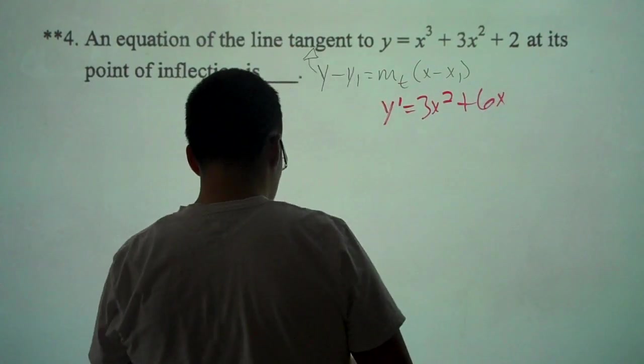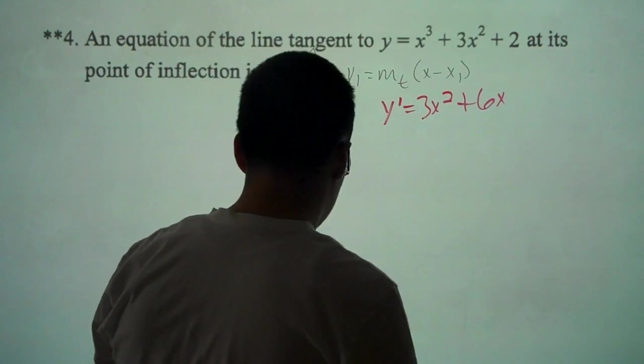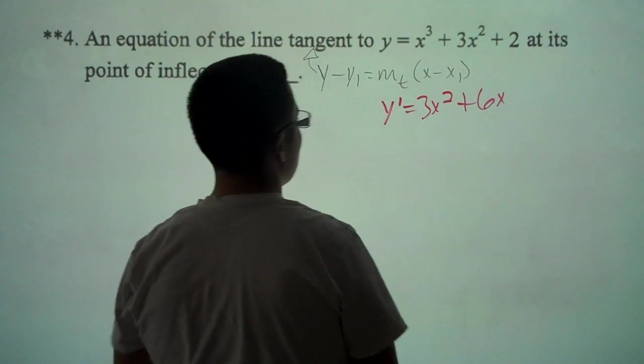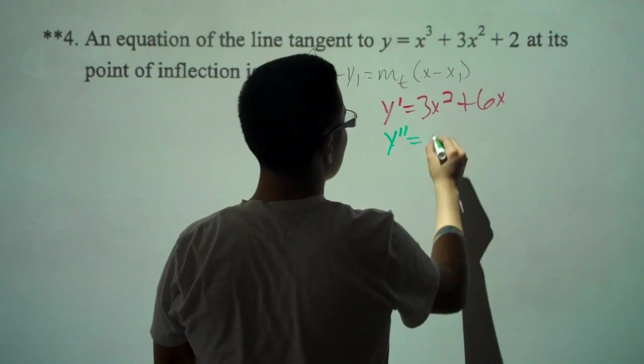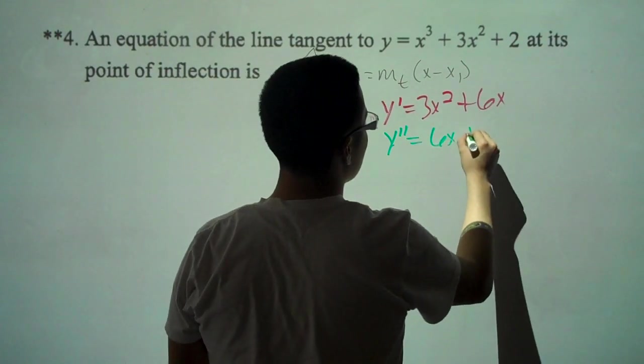Now we have to do y double prime to find our points of inflection. y double prime equals 6x plus 6.